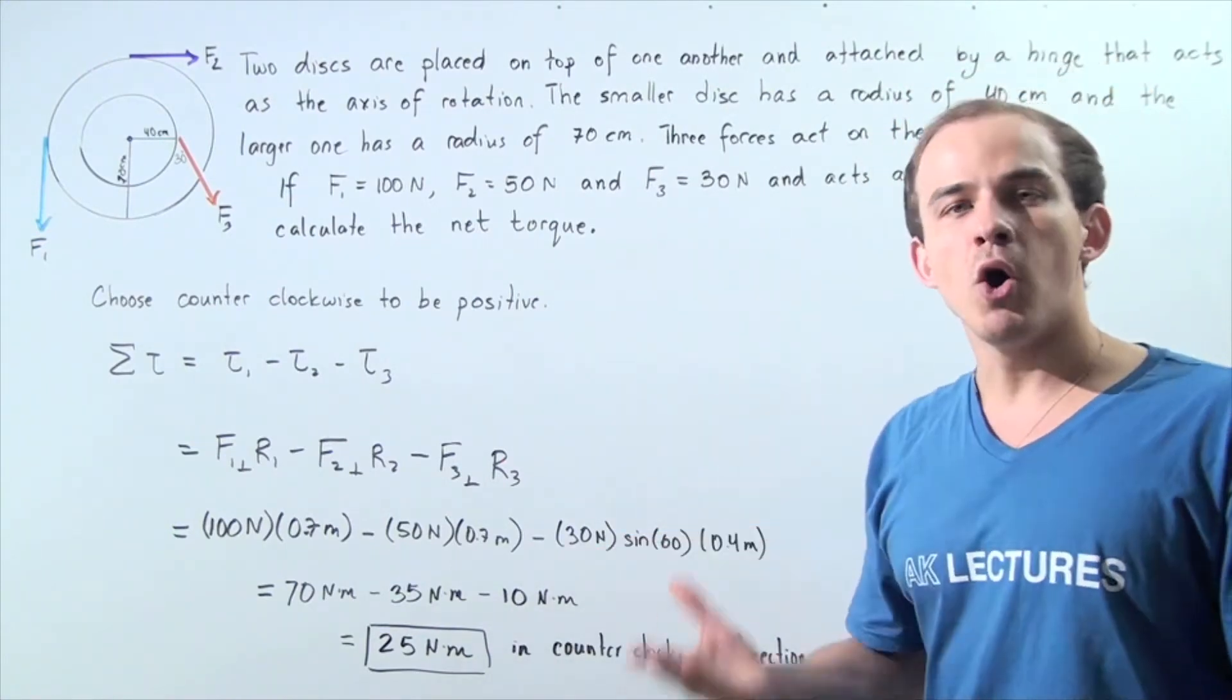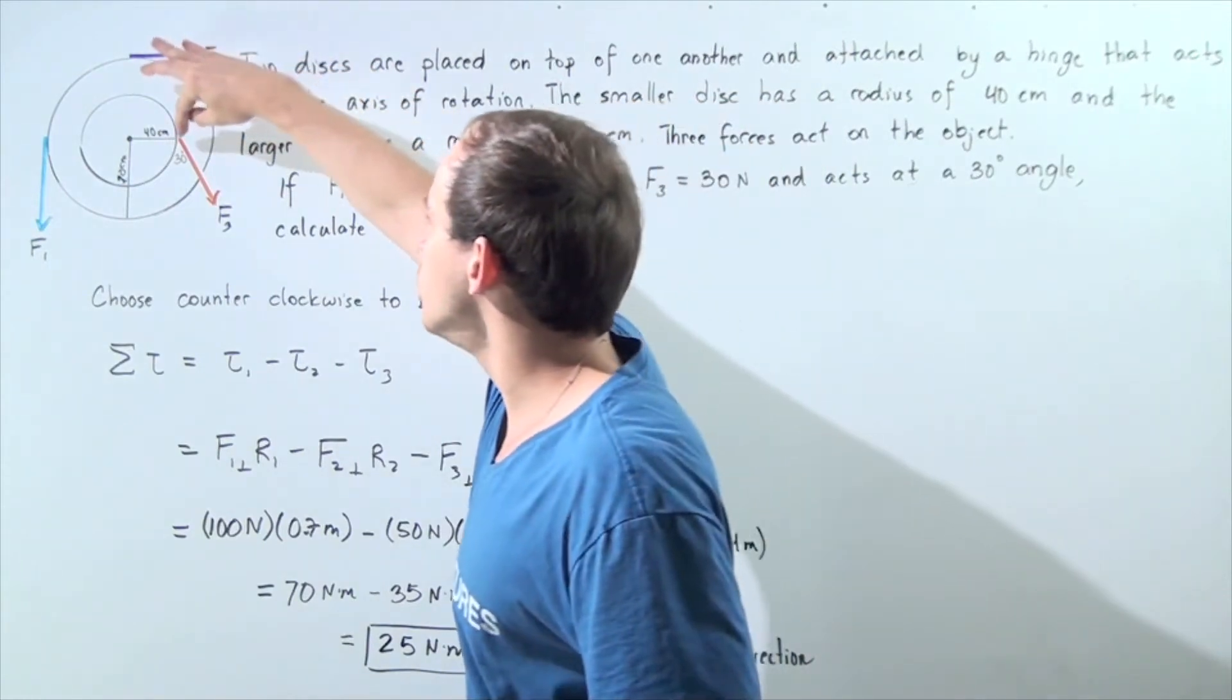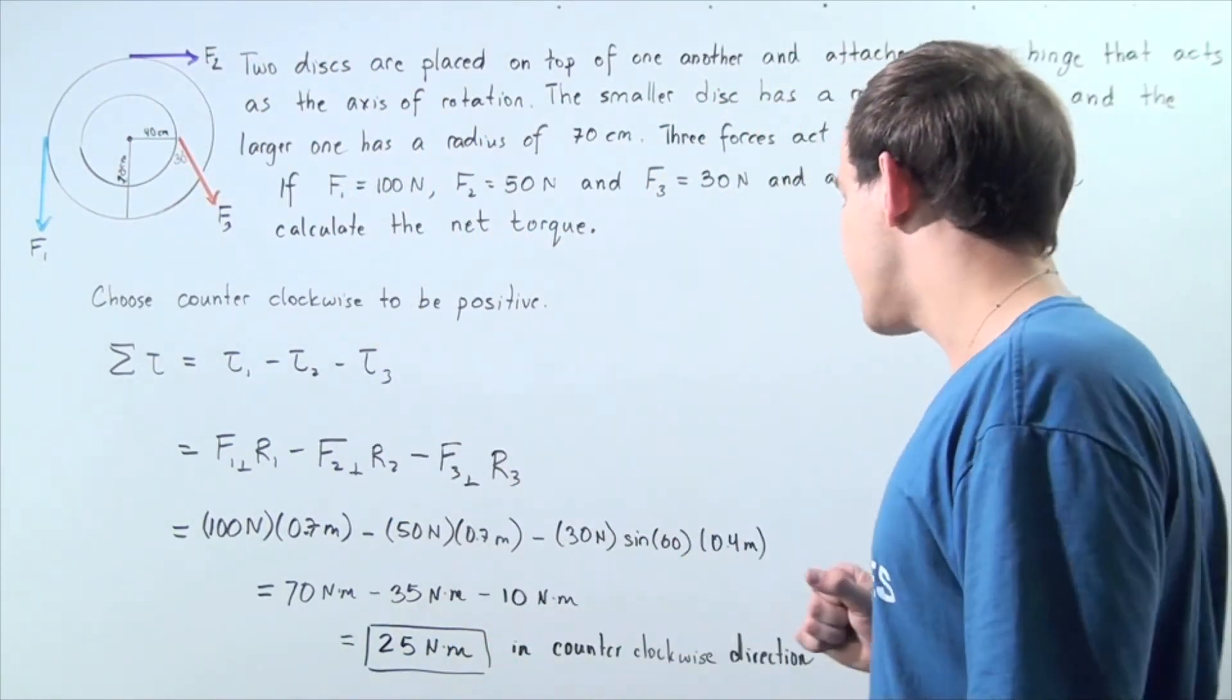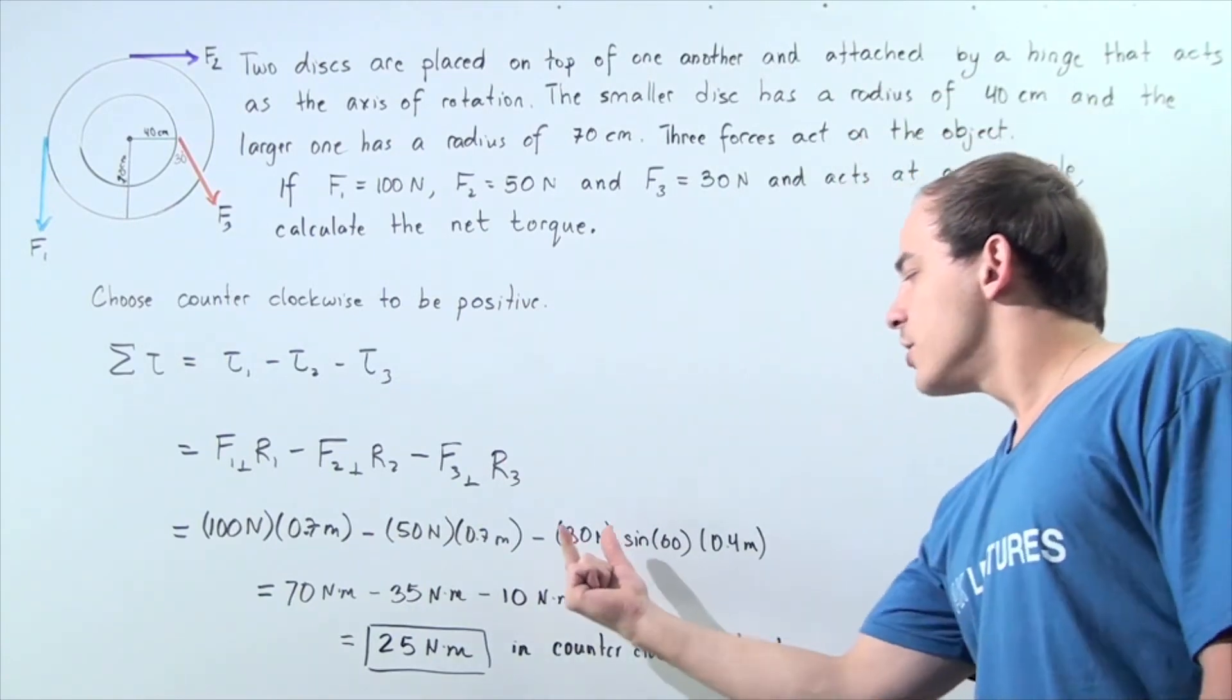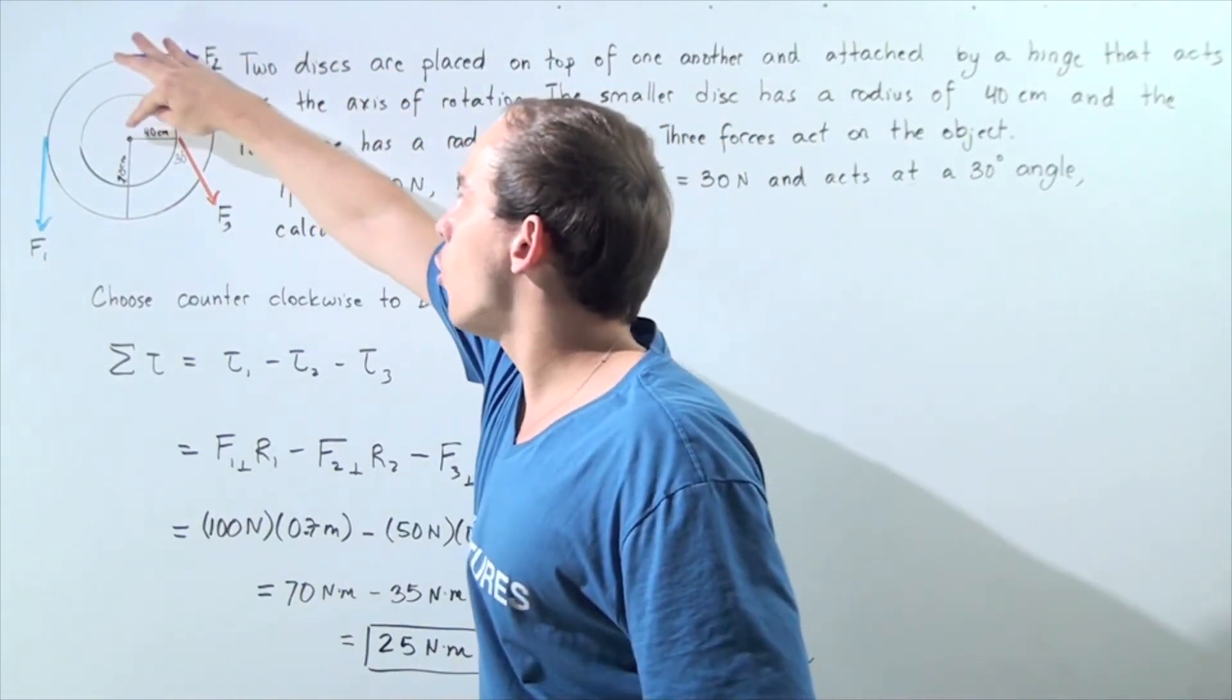30 newtons, and multiply by sine of the angle 60 because we're looking for the force that points along the y-axis. So we have 30 times sine 60 times 0.4 meters, the radius of the small circle.